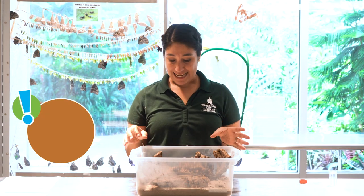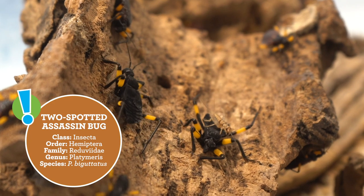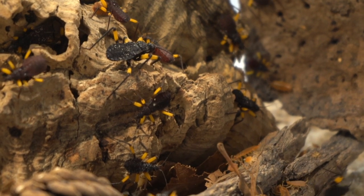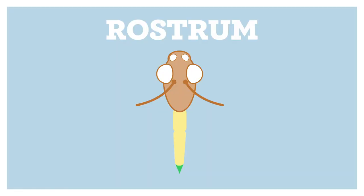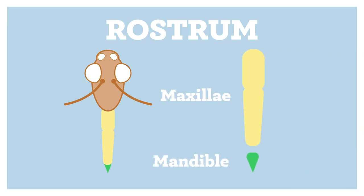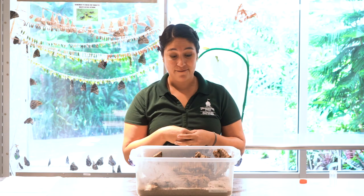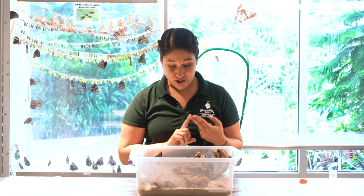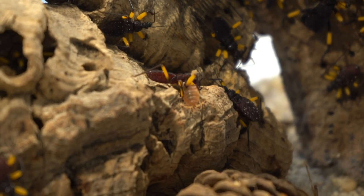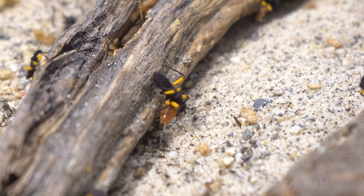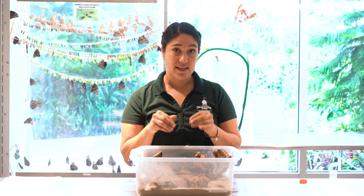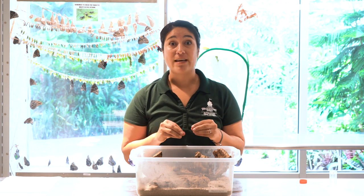Here we have some two-spotted assassin bug juveniles — we keep our adults on exhibit. These are part of the true bug order, characteristically identified by the presence of a rostrum, or beak, at the front of their face. That rostrum is made up of a combination of the mandibles and the maxillae to create a piercing-sucking mouthpart form. These are predators feeding on isopods and crickets — they stab that rostrum into their prey, inject saliva that acts as a venom to partially kill the prey and pre-digest it, and then slurp up the juices through the rostrum.